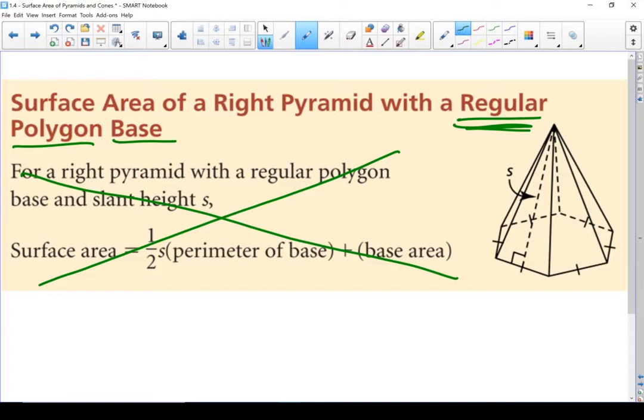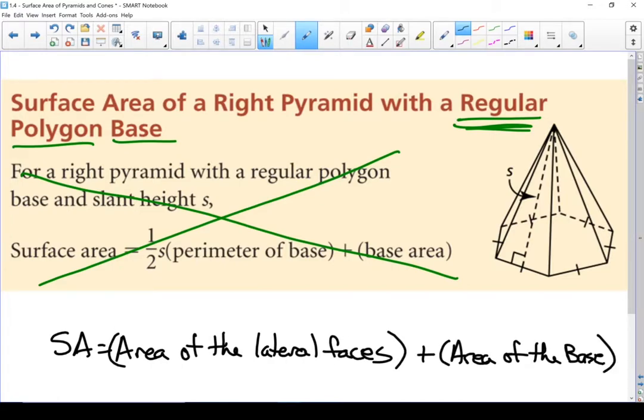So let's rewrite that as surface area equals the area of the lateral faces plus the area of the base. You're not wrong if you use the perimeter of the base formula, as long as you use a regular polygon base, whereas the formula I wrote down works for all right pyramids.